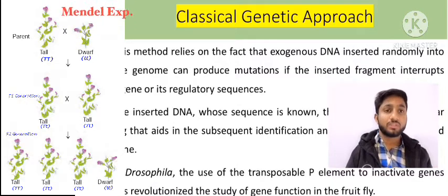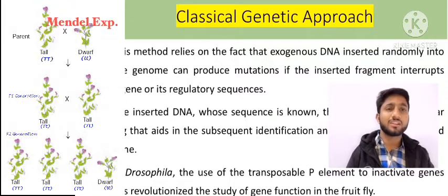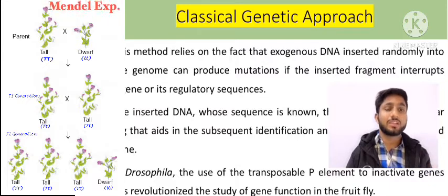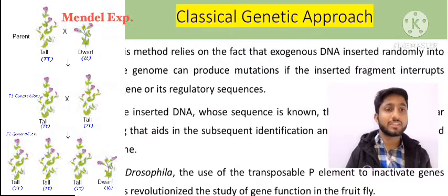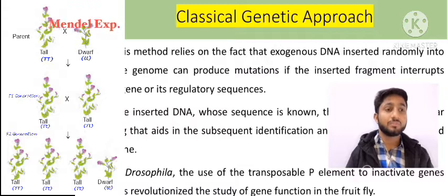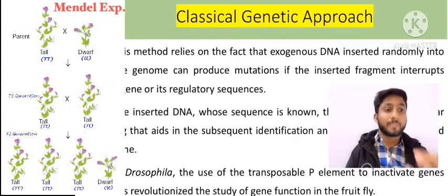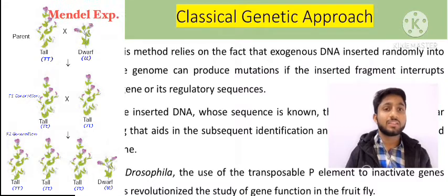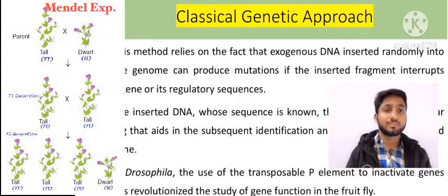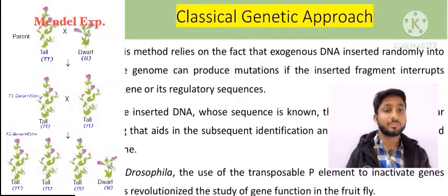Mendel extended this work in the 18th century. He crossed tall plants with short plants. While some intermediate plants were produced — which was not surprising — the surprising result for Mendel was also getting short plants and tall plants in the offspring, not just intermediate-sized ones.